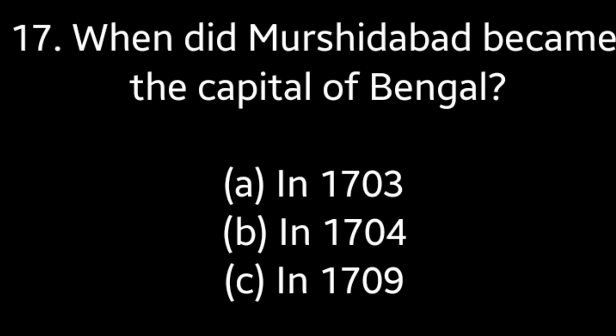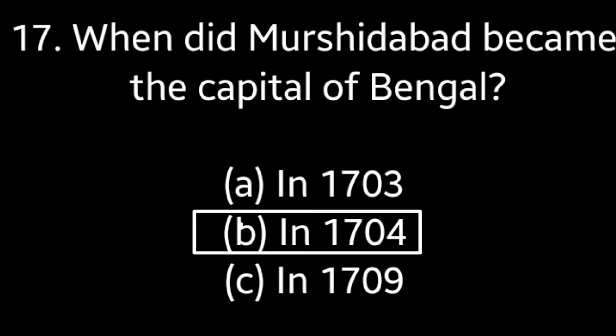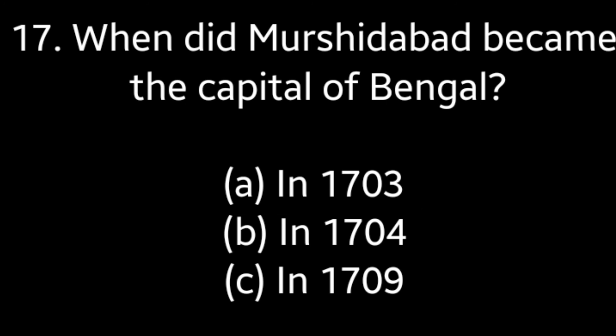Question No. 17. When did Murshidabad become the capital of Bengal? In 1703, in 1704, in 1709. Answer is Option B: In 1704.